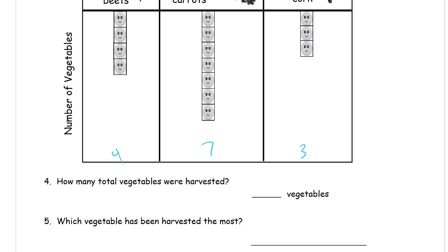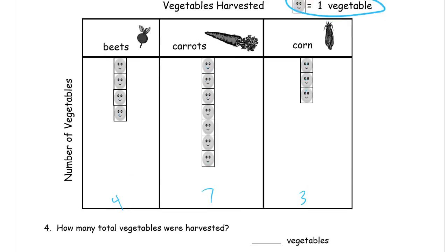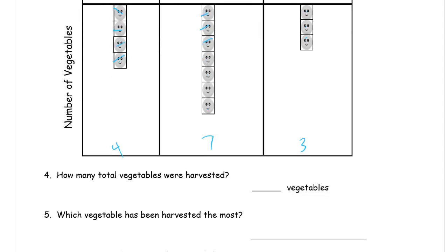How many total vegetables were harvested? We're going to count all the beets, carrots, and corn. You could just count them one by one, or you could add the numbers. I see an easy way to make 10 with that seven and that three, so I'll write seven plus three plus four. Seven plus three is ten, plus four more is fourteen. Fourteen vegetables total.